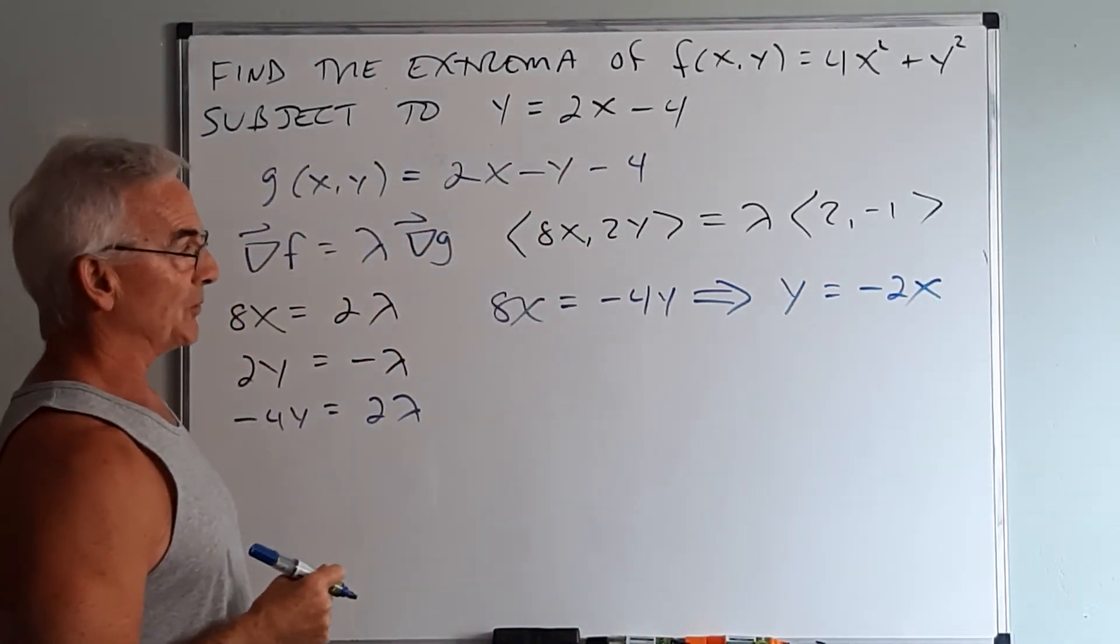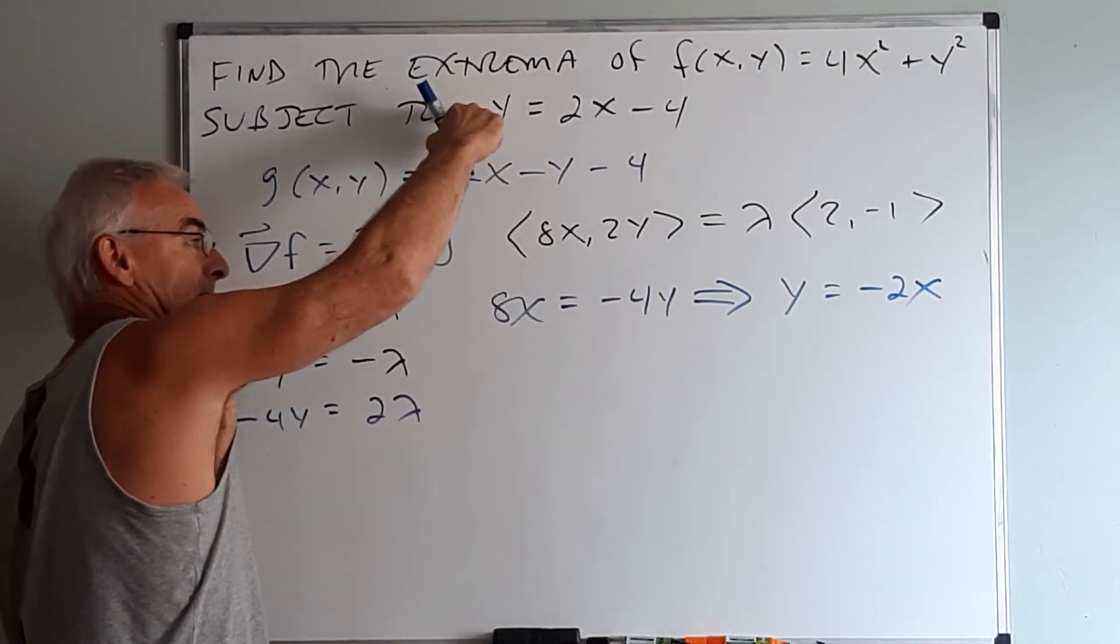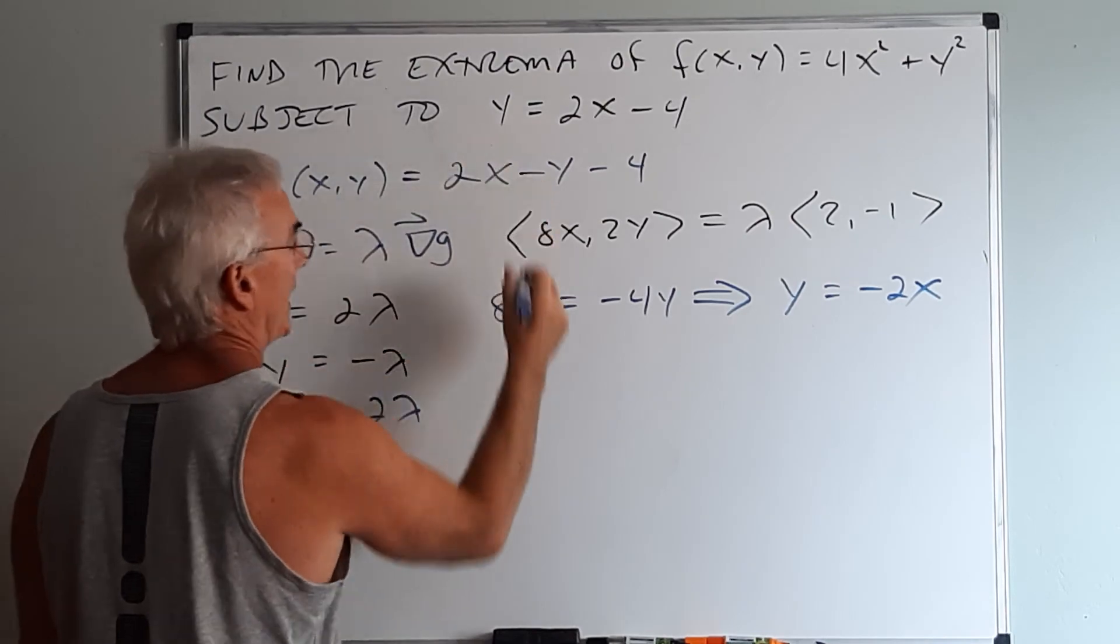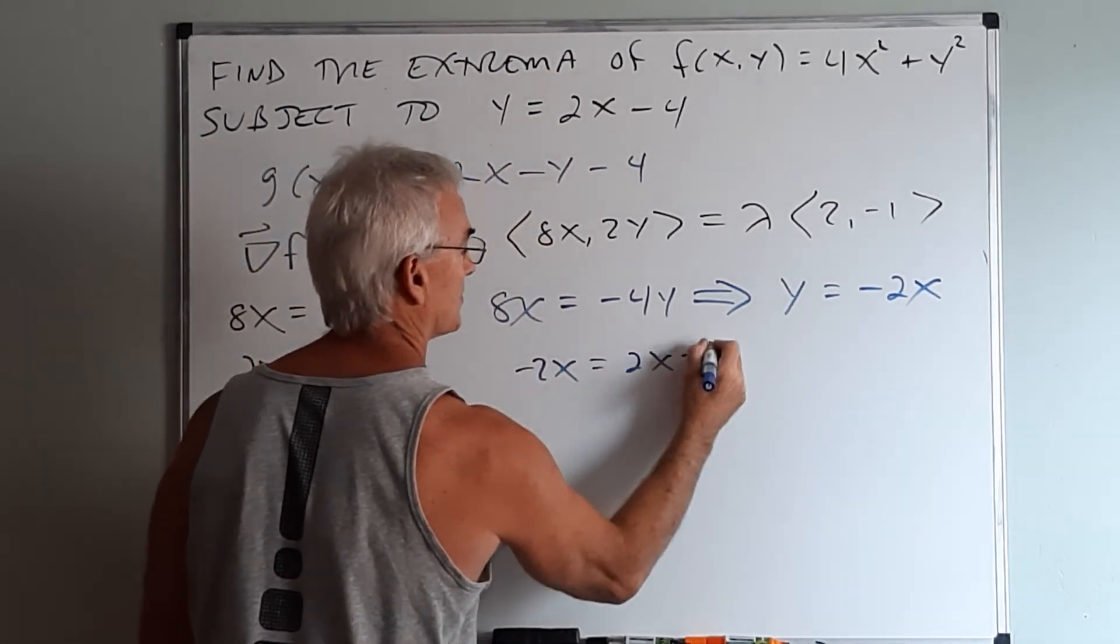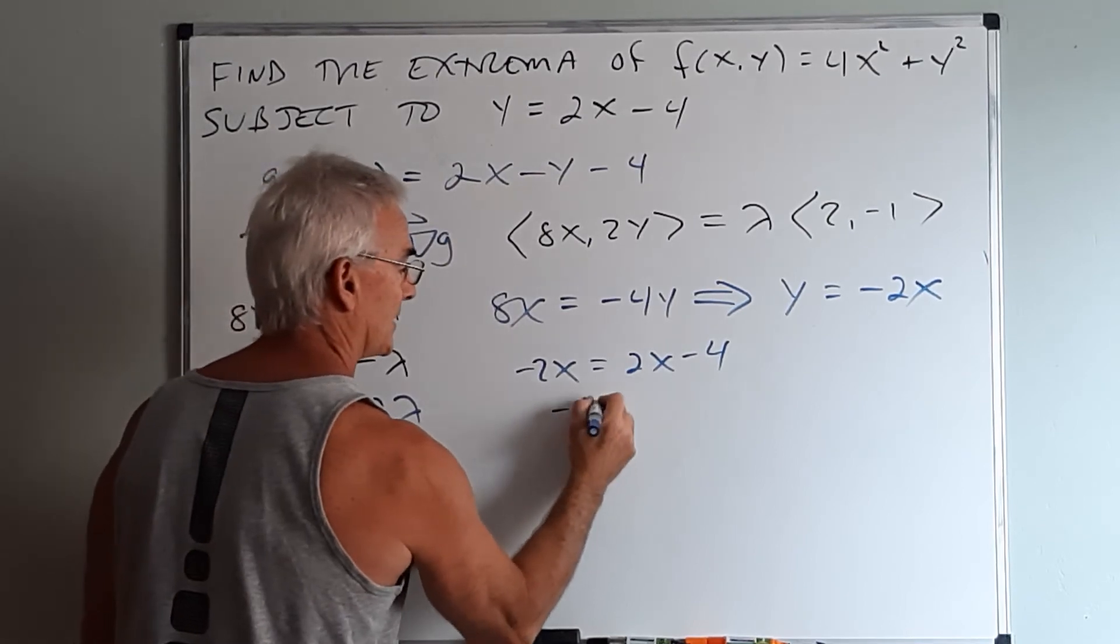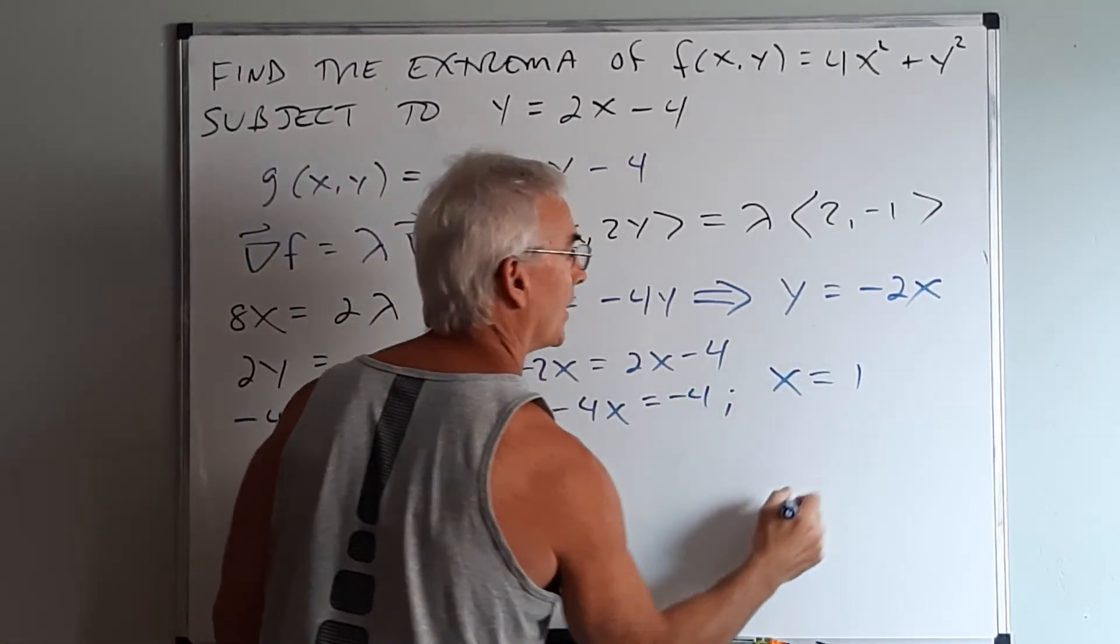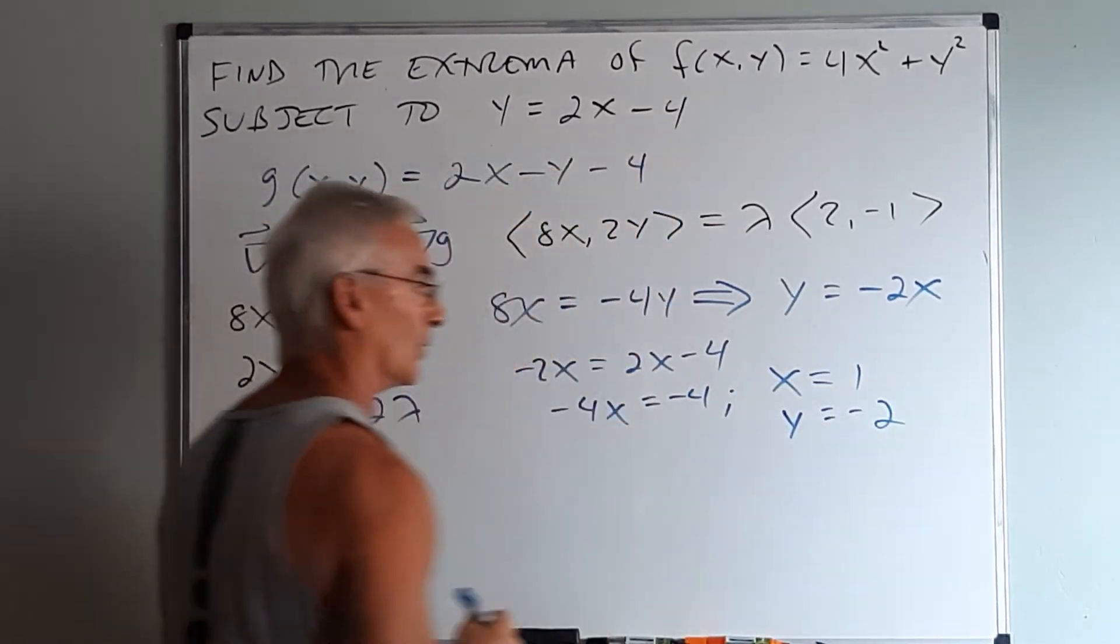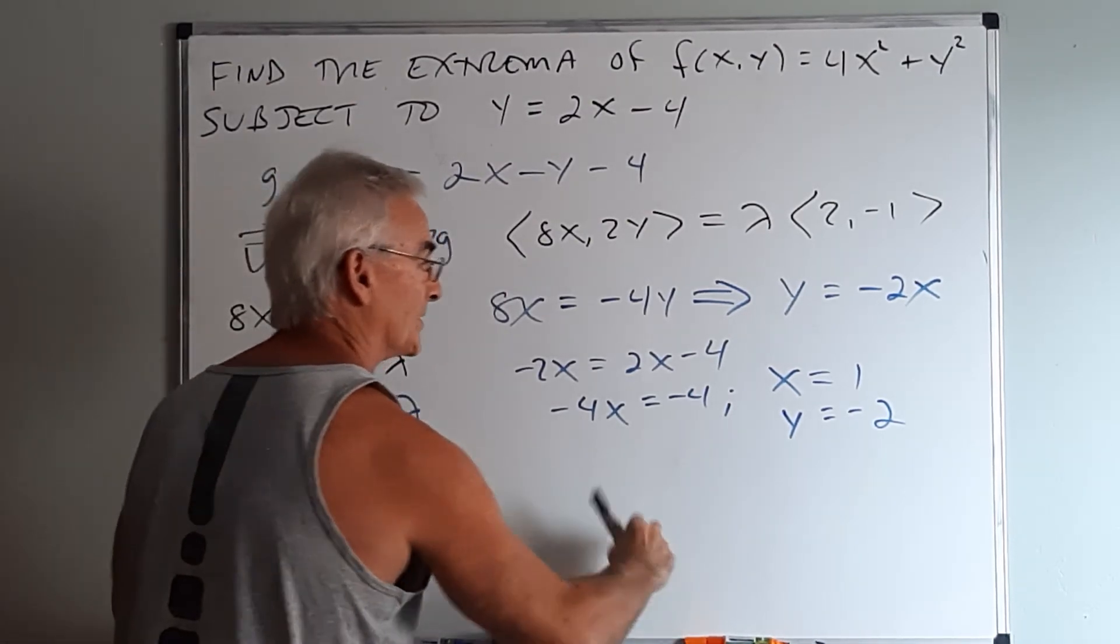Now I have the relationship between x and y. I will simply go back to the constraint and I will substitute this into the constraint. And when I do that, I will get negative 2x equals 2x minus 4 or negative 4x equals negative 4, which gives us x equals 1. Substituting here gives us y equals negative 2. So our extrema will occur at the ordered pair 1 comma negative 2.